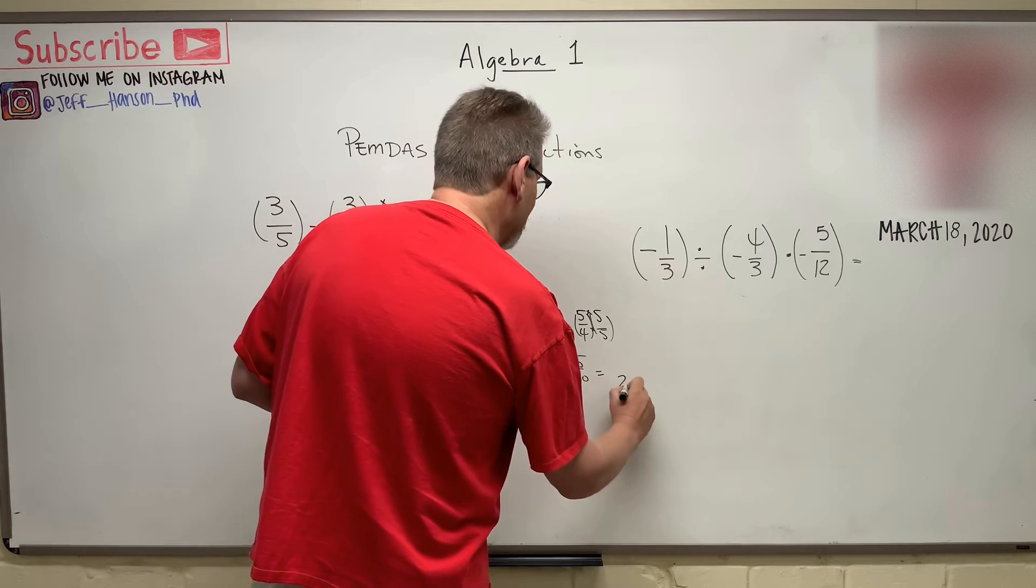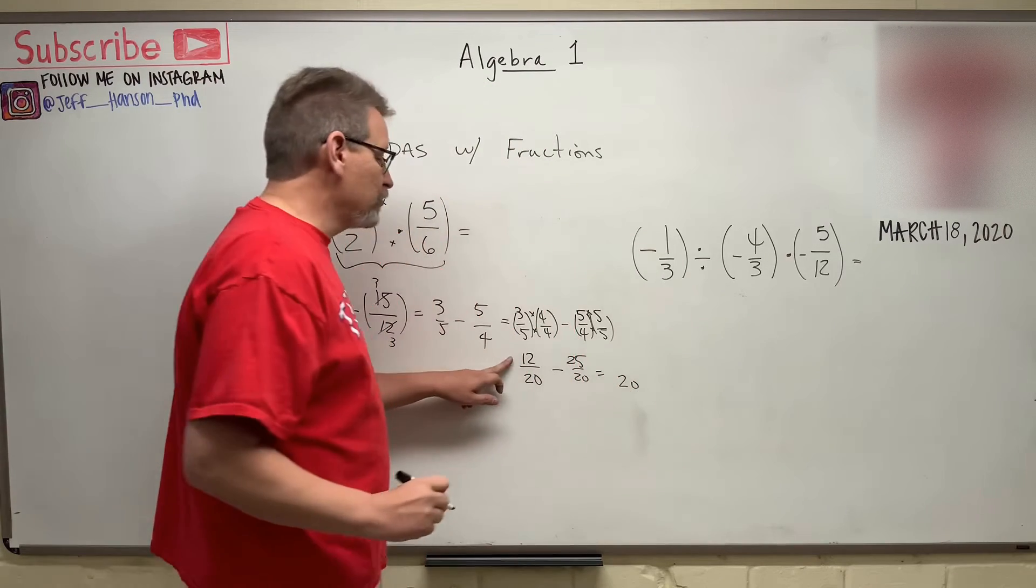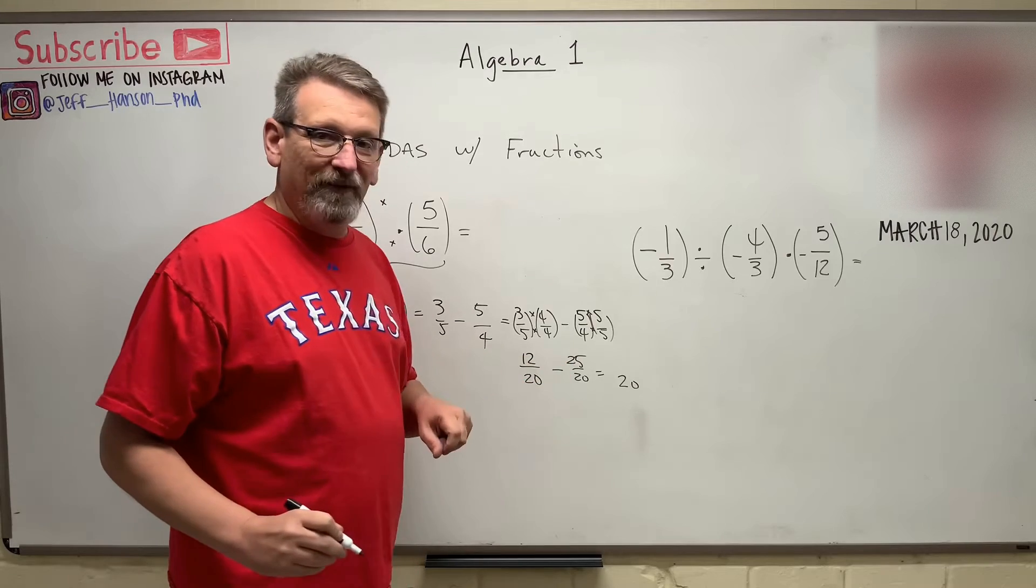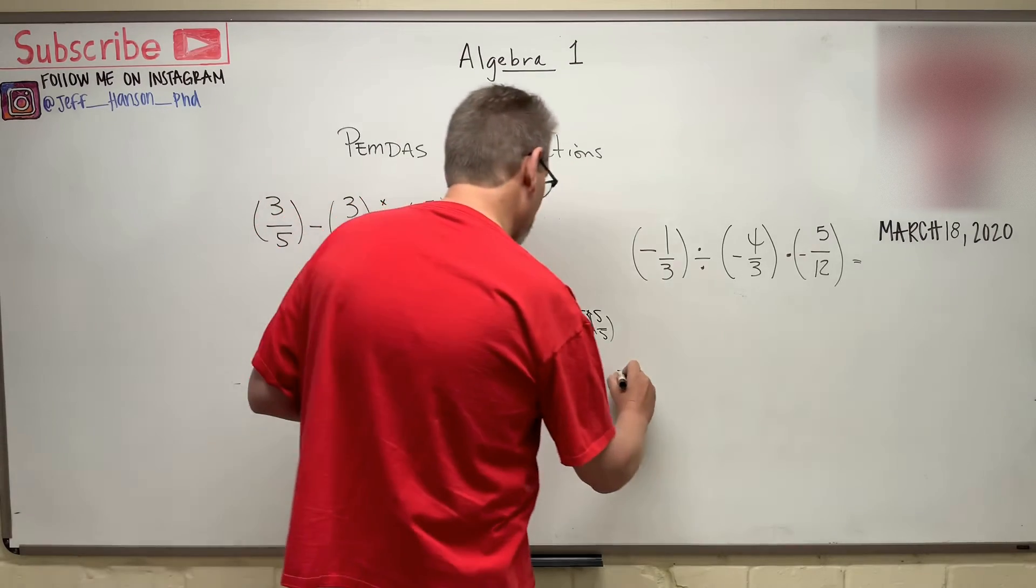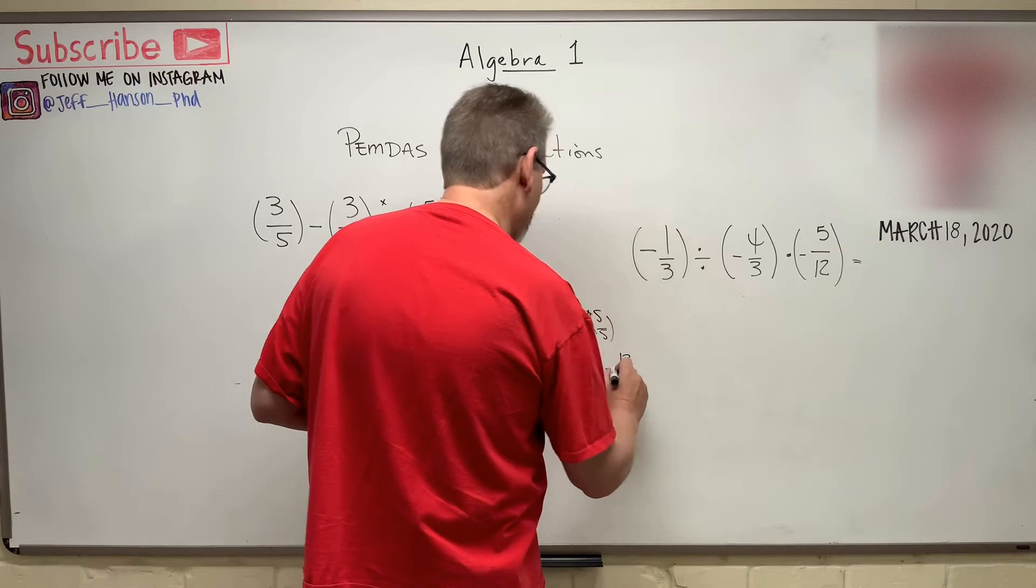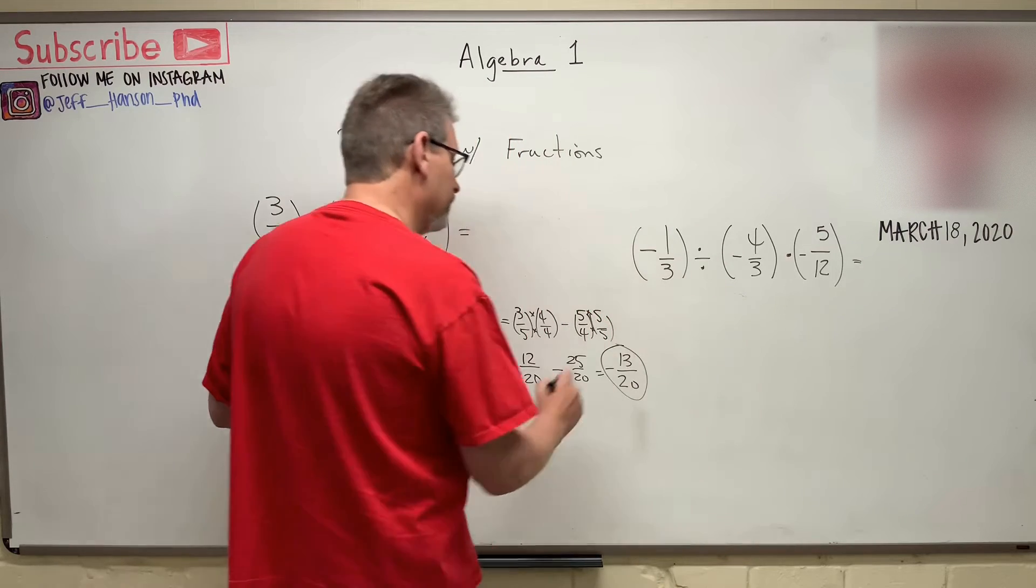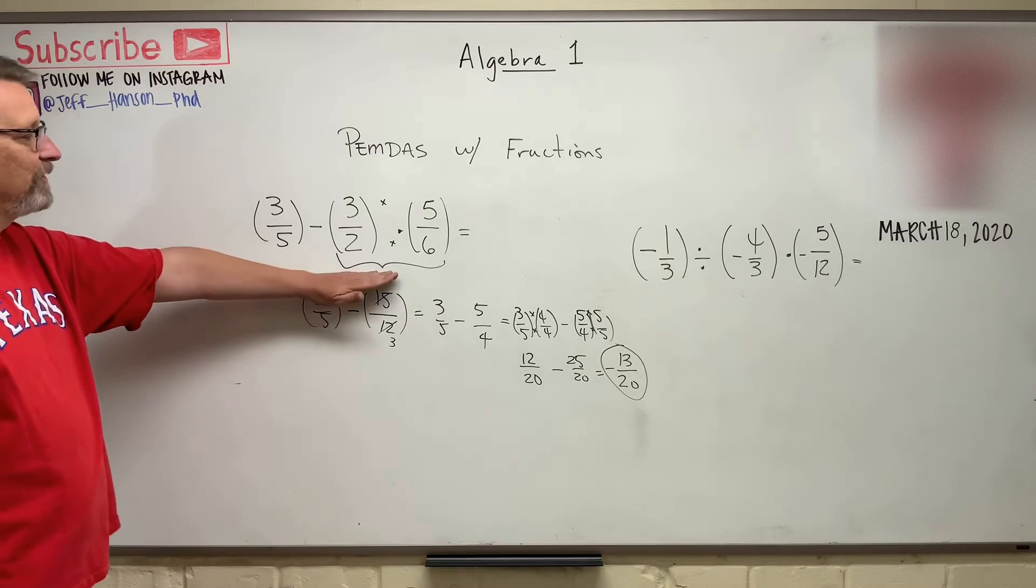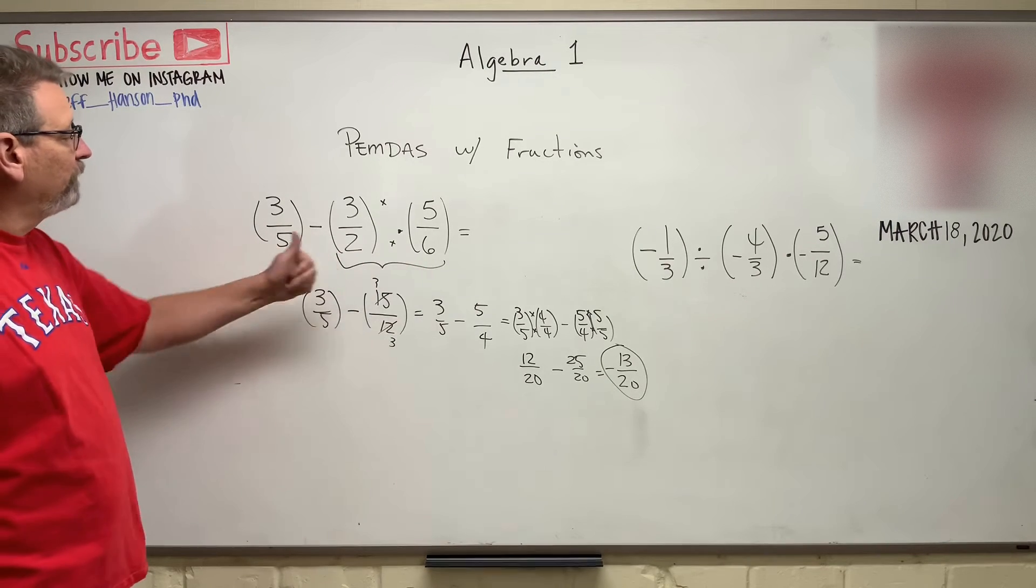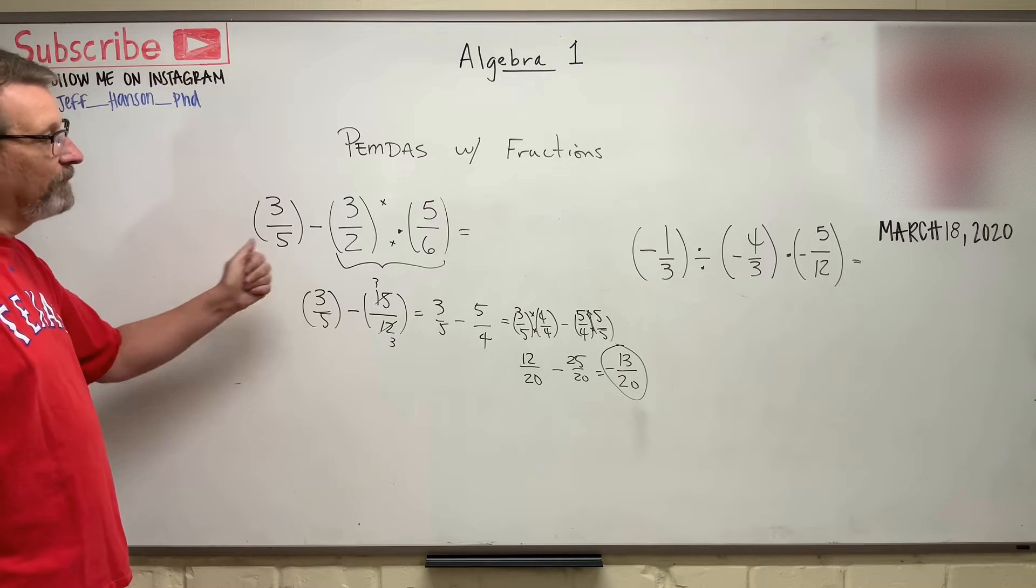The bottom is going to remain 20, and what is 12 minus 25? Minus 13. And that, my friends, is the answer. Do you see how we do that? Order of operations. We had to do this guy first, then do our least common multiple, and come back and get this guy.